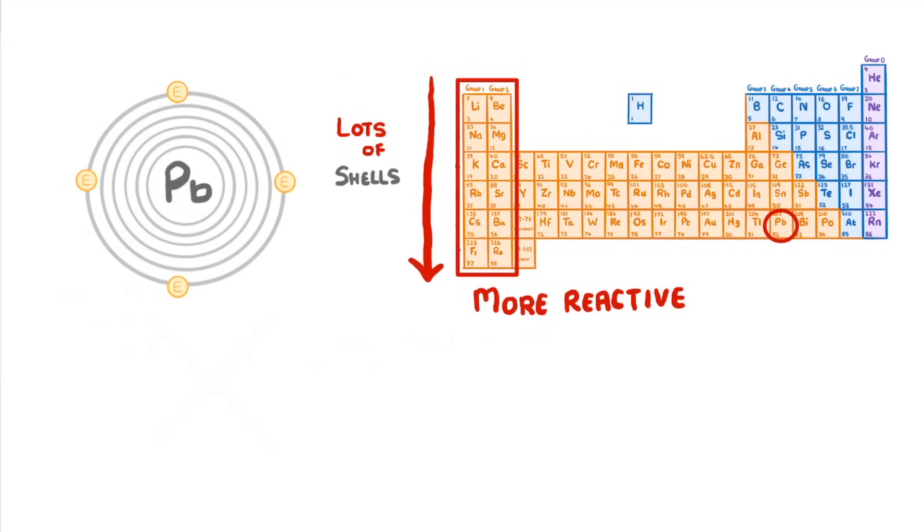Now, remember that in any atom it's the positive nucleus that holds these negative electrons in place. So if the electrons are really far away, like those in the sixth shell, then the nucleus can't hold onto them so strongly. So the atom will lose them more easily and form a positive ion. This feature is what makes those metals further down the group more reactive - they are just more likely to lose their electrons during a reaction.